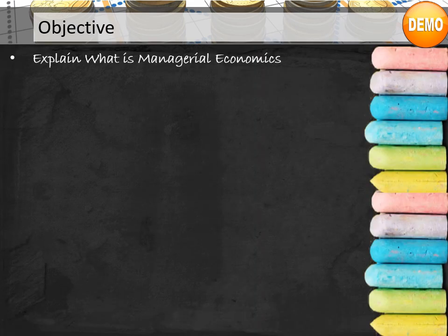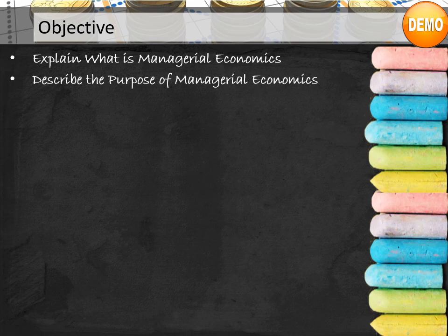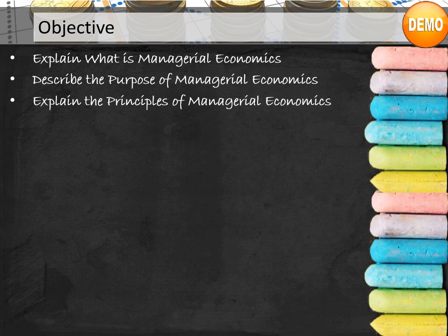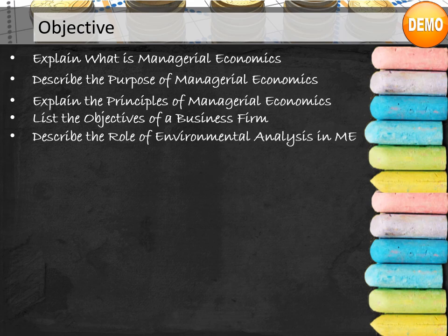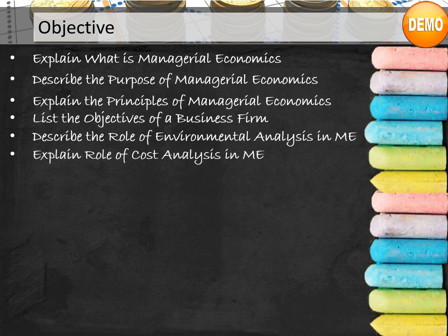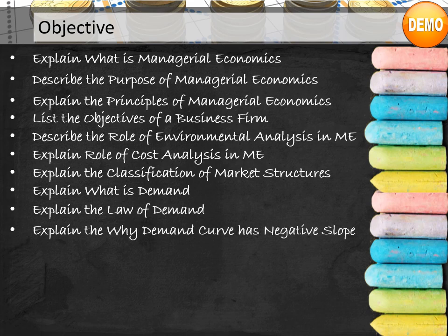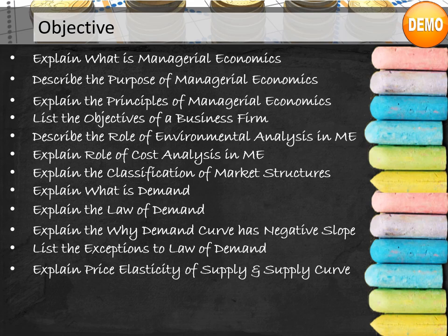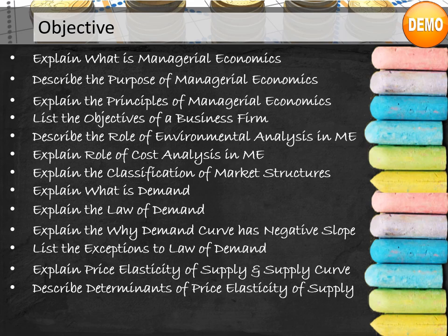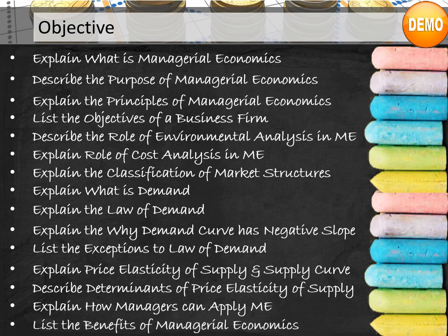Course Objectives: Explain what is managerial economics. Describe the purpose of managerial economics. Explain the principles of managerial economics. List the objectives of a business firm. Describe the role of environmental analysis in managerial economics. Explain the role of cost analysis in managerial economics. Explain the classification of market structures. Explain what is demand. Explain the law of demand. Explain why the demand curve has a negative slope. List the exceptions to the law of demand. Explain price elasticity of supply and supply curve. Describe determinants of price elasticity of supply. Explain how managers can apply managerial economics. List the benefits of managerial economics.